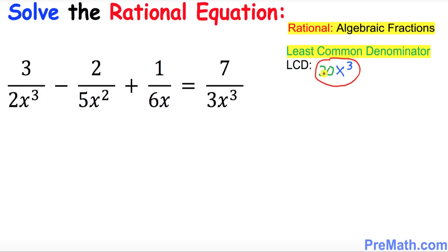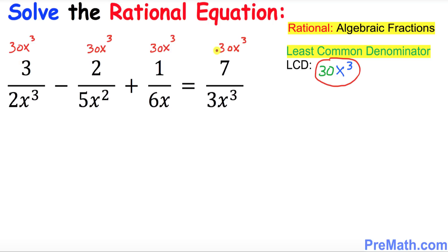In the next step, multiply the least common denominator across the board. Place 30x cubed on top of each and every term — the first, second, third, fourth, and fifth terms.